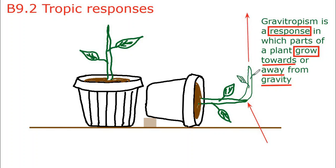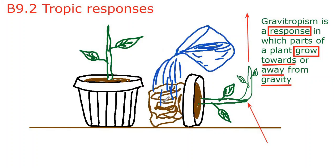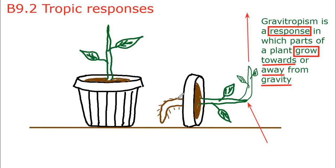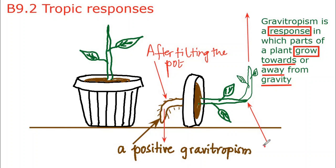This indicates that the shoot shows negative gravitropism, sometimes also called geotropism. In the previous syllabus it was called geotropism; now it is gravitropism — geo means earth and gravity also relates to earth, so they are the same thing. If we remove the soil, wash the roots, and observe them closely, we see that the roots have started bending towards gravity, showing positive gravitropism. So roots always grow towards gravity while the shoot always shows negative gravitropism and grows away from gravity.